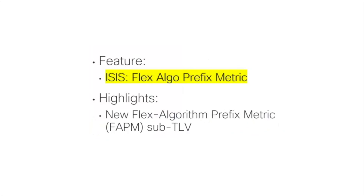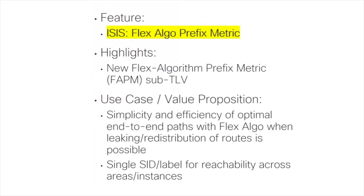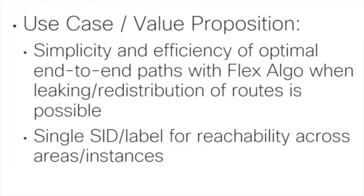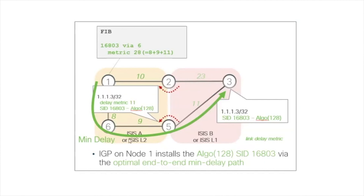Many of you are aware that we have been shipping Flex Algo for quite a few releases already. In 7.2.1 we introduced the latest enhancements to Flex Algo, where we implemented a new Flex Algo prefix metric sub-TLV. This allows us to benefit from the simplicity of Flex Algo even in a multi-domain or multi-level environment, enabling propagation between levels or redistribution between domains, with an optimum end-to-end path computed by the IGP.